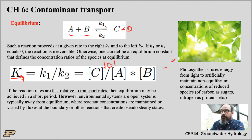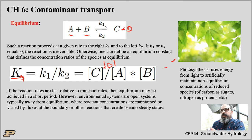Photosynthesis, for example, uses energy from sunlight to artificially maintain non-equilibrium concentrations of reduced species — mostly carbon as sugars, nitrogen as protein. It uses the energy from sunlight to reduce carbon dioxide and make sugars from it.